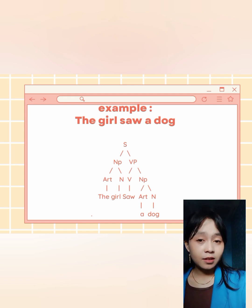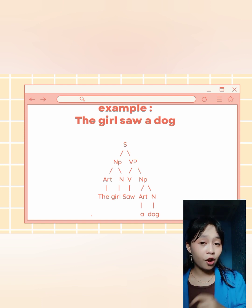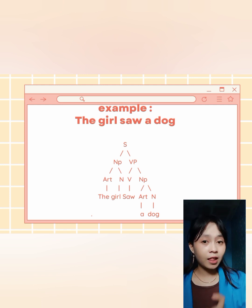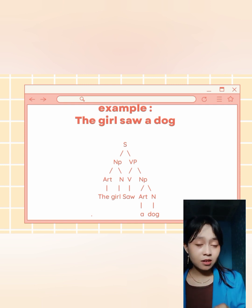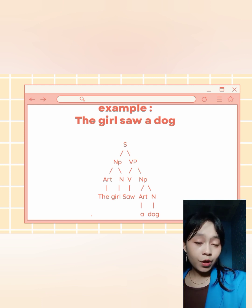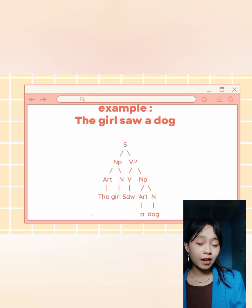First, we write S at the top of the tree diagram. Under S, there are NP (noun phrase) and VP (verb phrase). Under NP, there are article 'the' and noun 'girl'. Under VP, there are verb 'saw' and another NP with article 'a' and noun 'dog'.